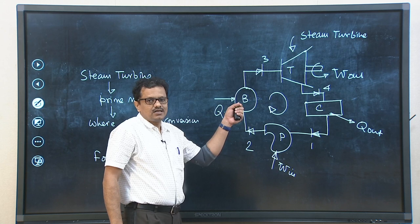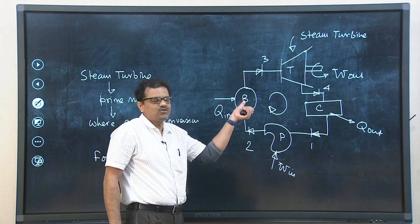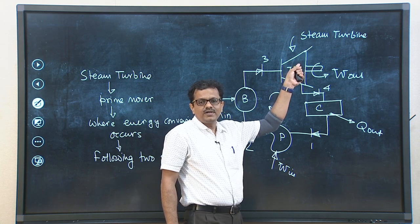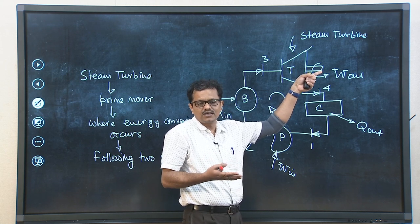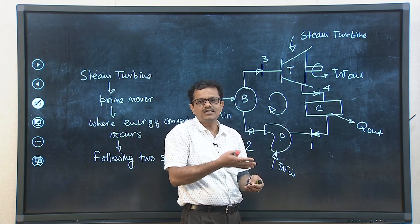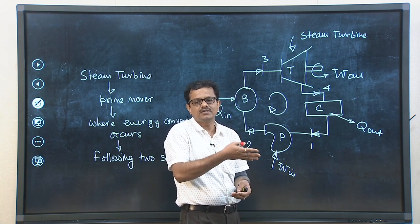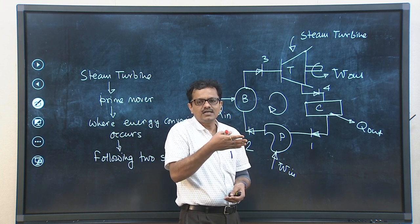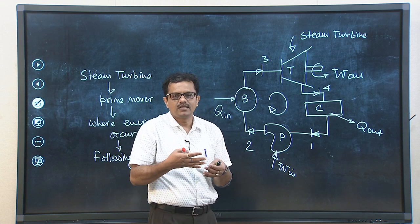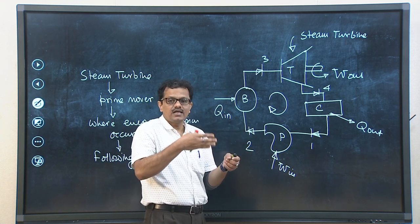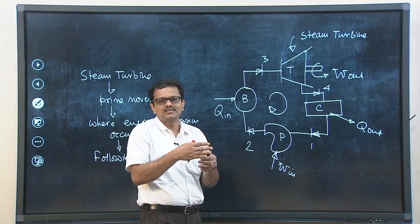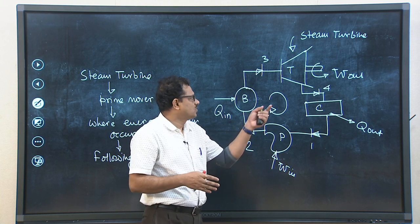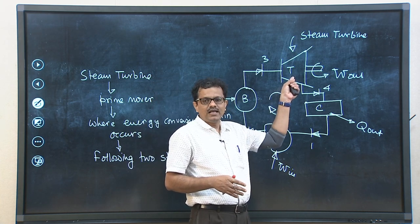Steam produced inside the boiler is not taken directly into the turbine. Instead, there are flow nozzles and steam is taken first into the flow nozzle. While passing through the flow nozzle it expands, and the sole purpose of the flow nozzle is to increase the kinetic energy of steam before it strikes the turbine blade. The kinetic energy of the steam jet must be very high before it leaves the nozzle and strikes the turbine blades.